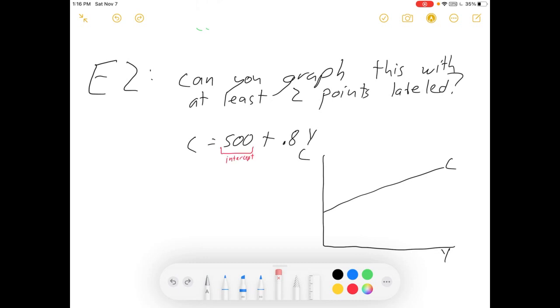Well, that 500 is the intercept. It's the autonomous consumption. It goes right there. When Y equals 0, C equals 500.